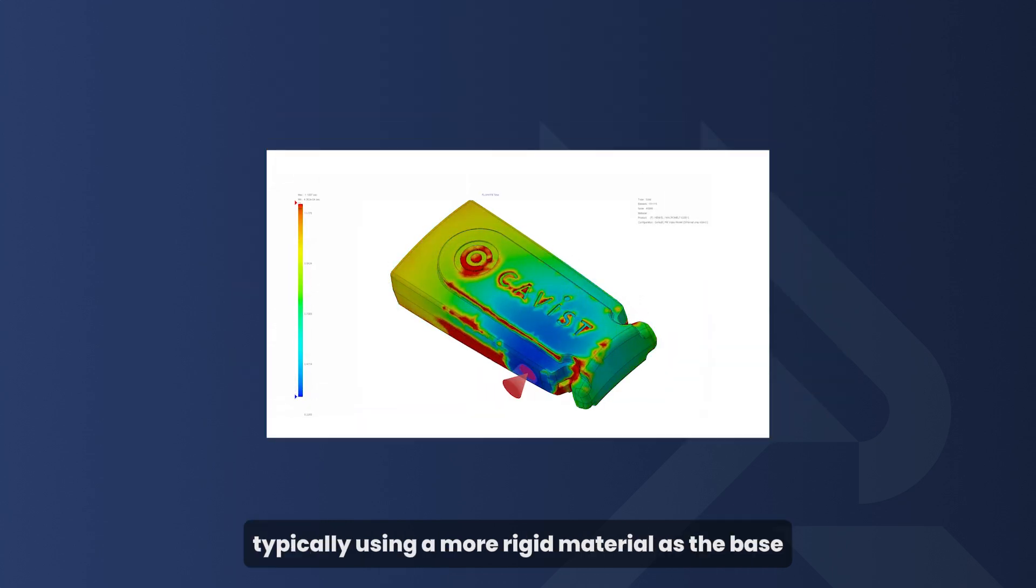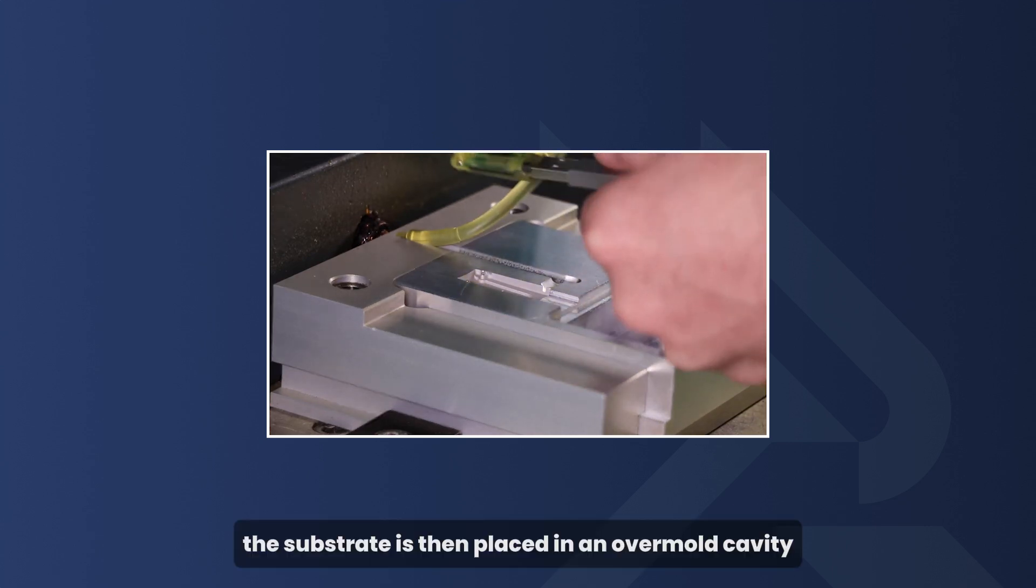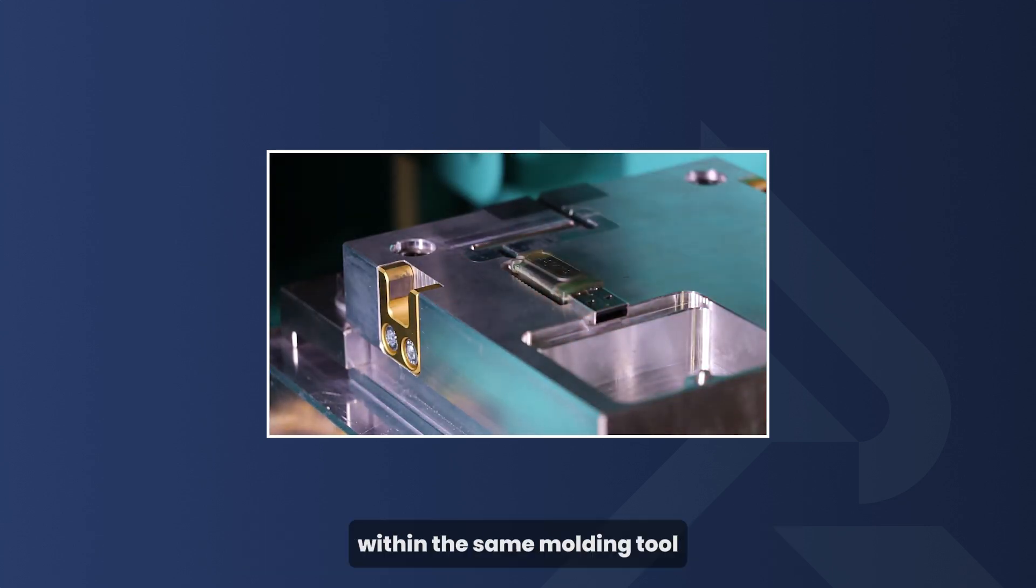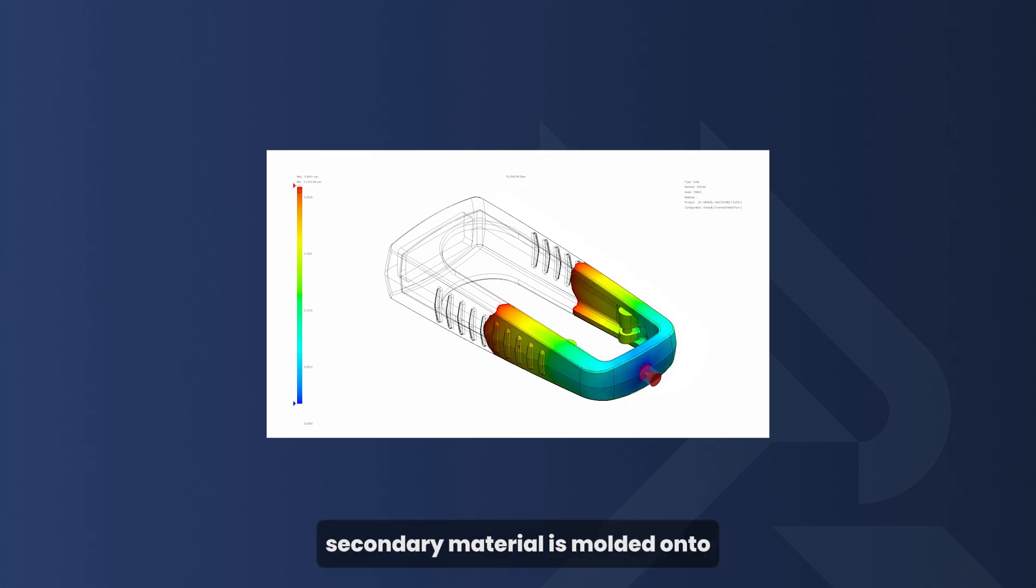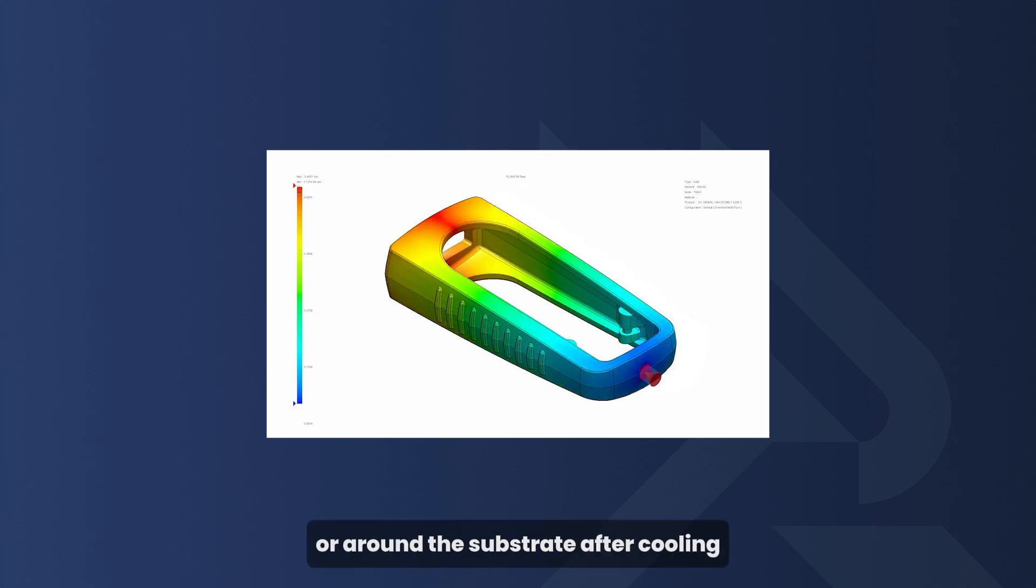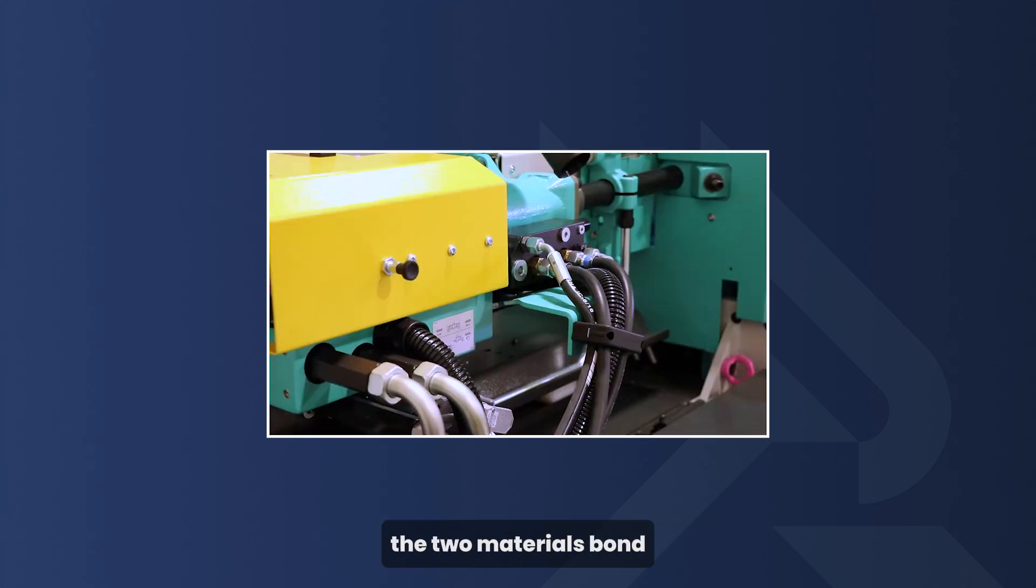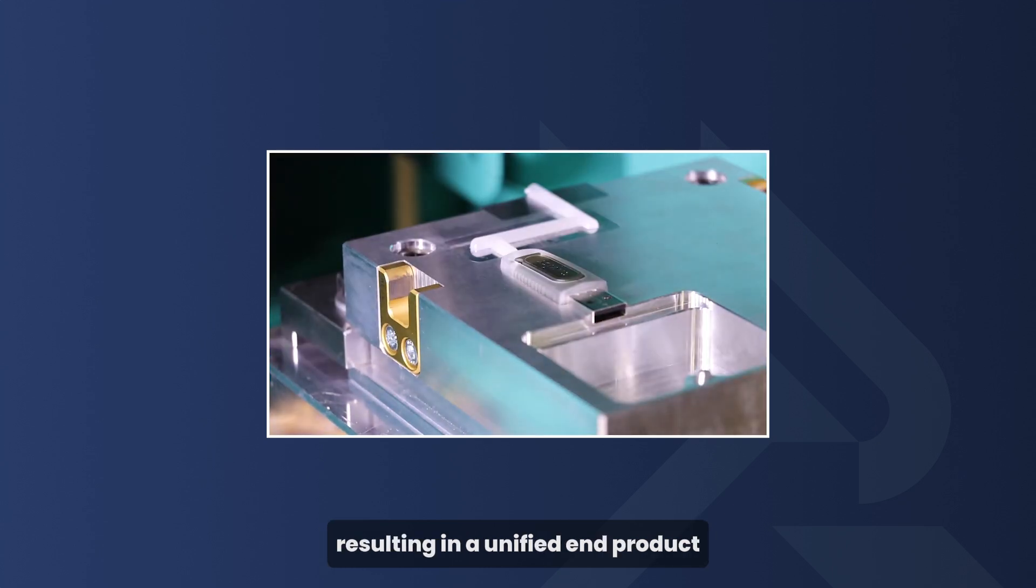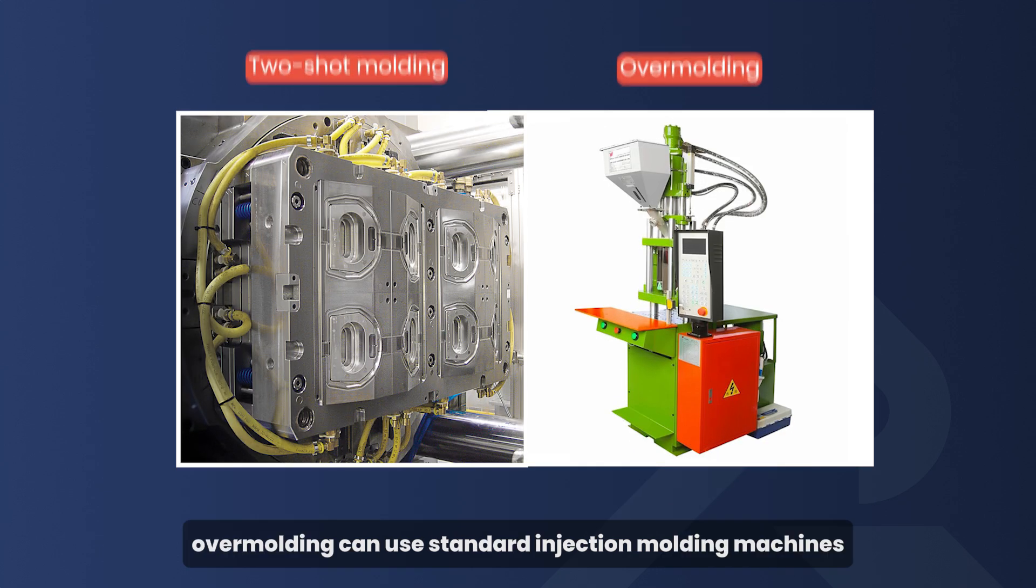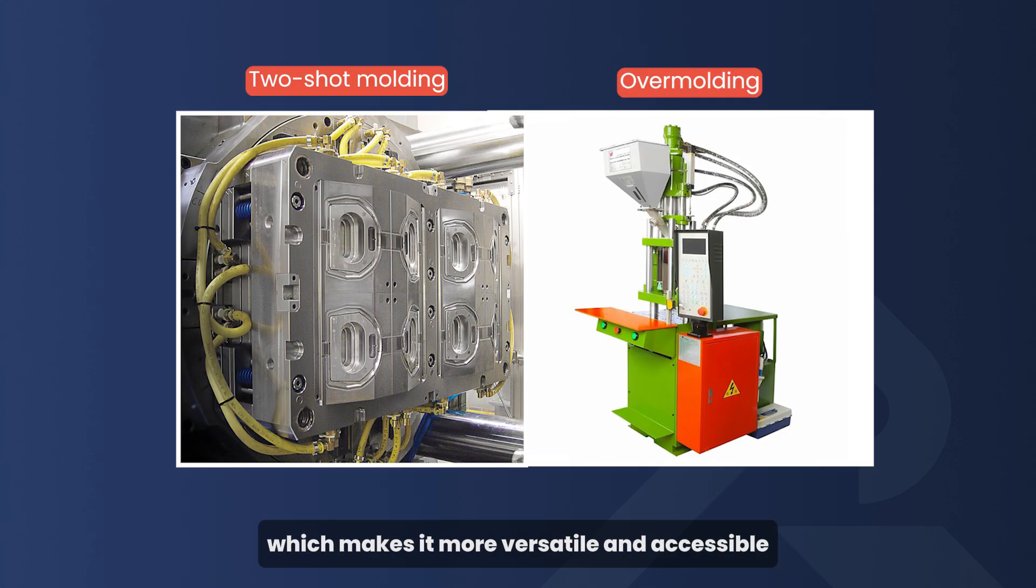The substrate is then placed in an overmold cavity within the same molding tool. Next, molten secondary material is molded onto or around the substrate. After cooling, the two materials bond either mechanically or chemically, resulting in a unified end product. Unlike two-shot molding, overmolding can use standard injection molding machines, which makes it more versatile and accessible.